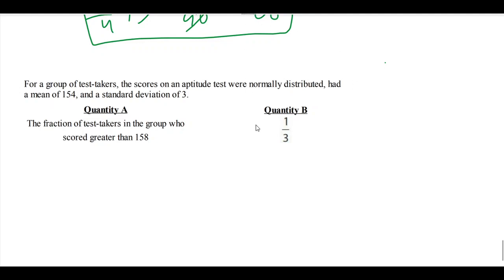Okay, let's see what this question is really saying to us. For a group of test takers, the scores on an aptitude test, probably like GRE, were normally distributed, had a mean of 154, and had a standard deviation of 3. The fraction of the test takers in the group who scored greater than 158 is 1 over 3.